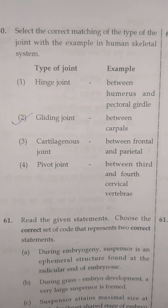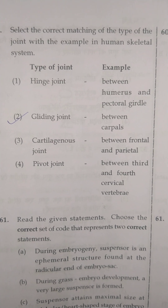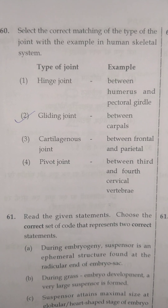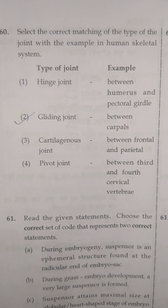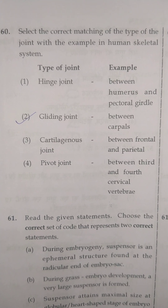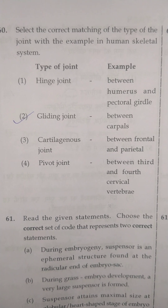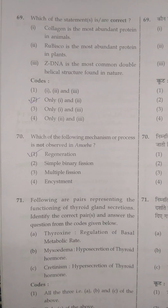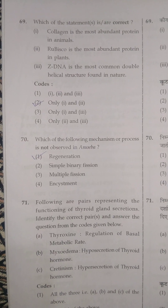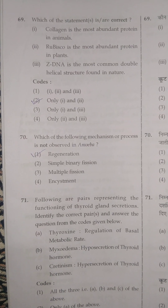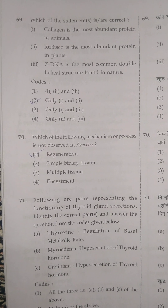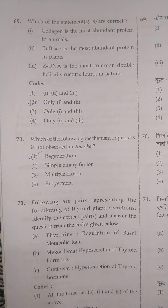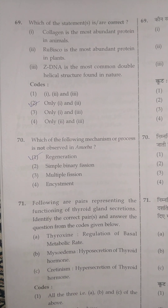The next question: select the correct matching of the type of joint with the example in human skeleton. The correct example is of carpals — option 2, gliding joints, which are present between carpals. The next question, question number 69: which of the following statements are correct? The correct option is option 2 — only statements 1 and 2.